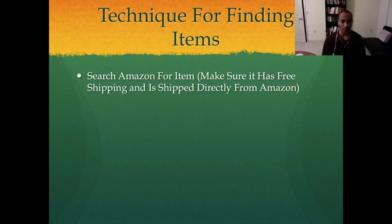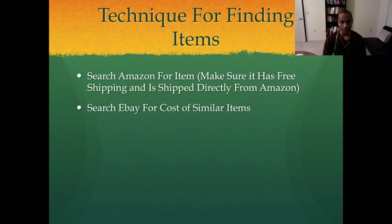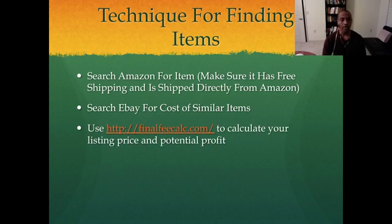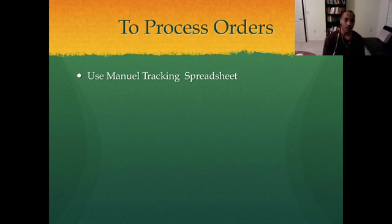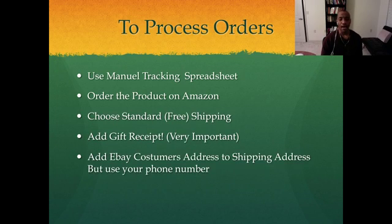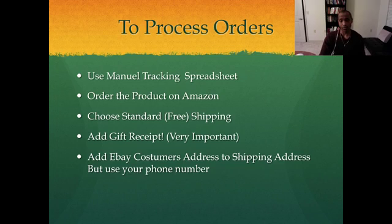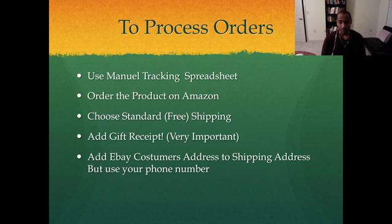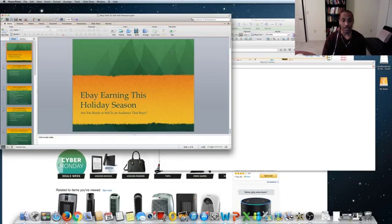So how are we going to find the items? You're going to search for the item on Amazon, make sure it has free shipping and is shipped directly from Amazon. Search for similar items on eBay. Use finalfeecalc.com to calculate how much you should be selling it for on eBay. To process orders, use a manual tracking spreadsheet. Order the product from Amazon, choose standard free shipping, use a gift receipt, and add the eBay customer's address as your shipping address, but use your phone number in case the seller needs to contact you.